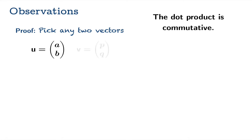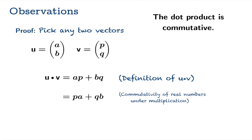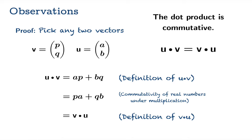The dot product is commutative. Suppose you pick any two vectors u and v and calculate u·v — you get ap + bq by definition. But ap = pa and bq = qb by commutativity of real number multiplication. You should recognize that pa + qb is exactly what you get when you compute v·u by definition. So u·v and v·u are the same — the order you take the vectors doesn't matter.